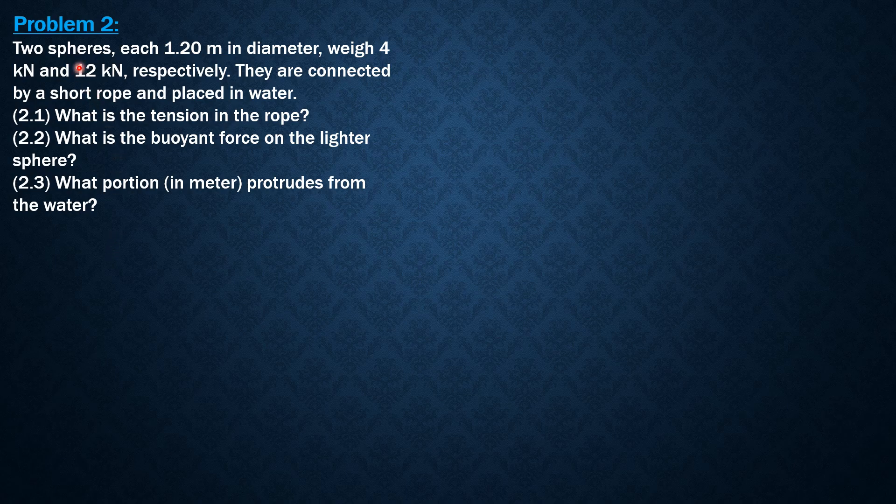So, we do not know the situation yet. There is a possibility that both spheres will float. Another possibility is the heavier sphere is on the bottom portion, totally submerged, and the other one, the lighter sphere, floats. Only a portion of the lighter sphere will be submerged. Those are the possible situations.